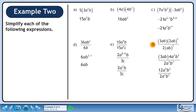The numerator becomes 12a cubed b cubed, and the denominator becomes 2a cubed b cubed. The powers of a and the powers of b cancel out. The answer is 6.